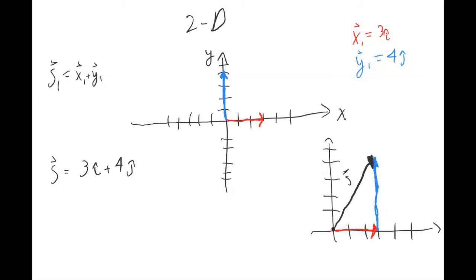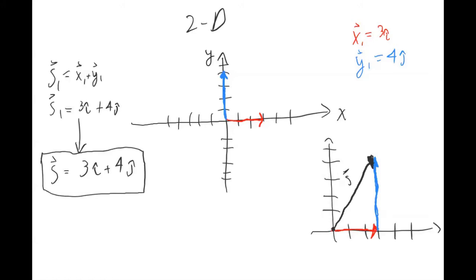What this is telling us mathematically is that your x vector was 3i hat and your y vector was 4j hat. We can't add these two things together because x and y directions are two separate things. So instead of adding them together, you leave the i's to themselves and the j's to themselves, giving you a two-dimensional vector with x component 3 and y component 4. This is one way to represent a two-dimensional vector using its i and j components.